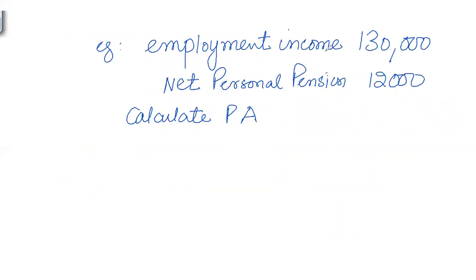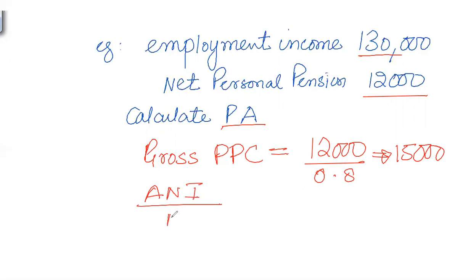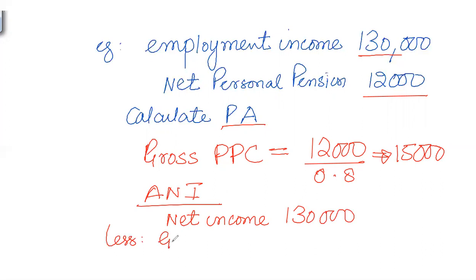For example, suppose we have employment income of £130,000 and a net pension contribution of £12,000. How much personal allowance is available? First, convert the net pension to gross PPC: £12,000 divided by 0.8 equals £15,000. Now find ANI: employment income is £130,000, deduct gross PPC of £15,000, giving ANI of £115,000.